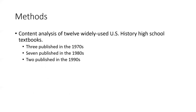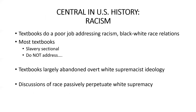For his book, he conducts a content analysis of 12 widely used U.S. history high school textbooks — three published in the 1970s, seven in the 1980s, and two in the 1990s. He concludes that our public school textbooks do a poor job addressing racism and Black-white race relations. Most textbooks present slavery as a sectional problem rather than a national problem, treating it as something that took place in the South rather than examining how all parts of our nation are intimately connected to slavery and white supremacy.